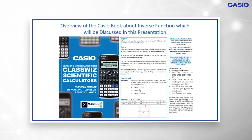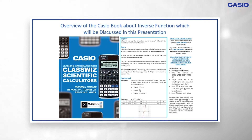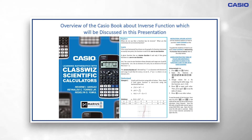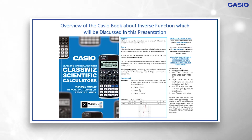Before we begin, remember that a given function has an inverse function if and only if the given function is a one-to-one function — a one-to-one function whose graph intersects a horizontal line at exactly one point. Also, the domain of a one-to-one function is the range of its inverse, and the range of the one-to-one function is the domain of its inverse. To easily understand this, let us proceed to the first example.